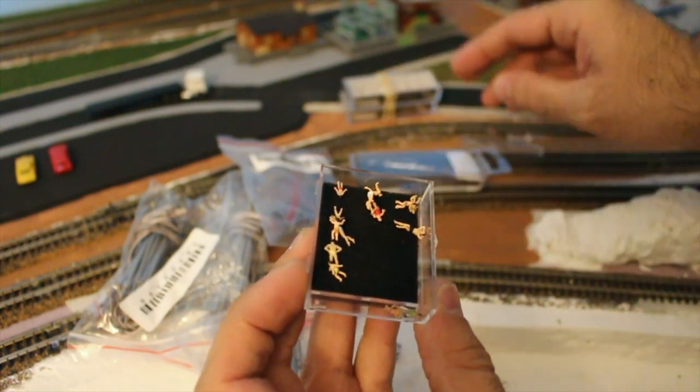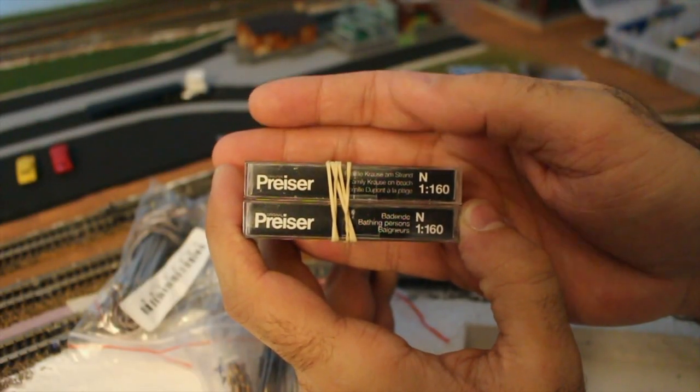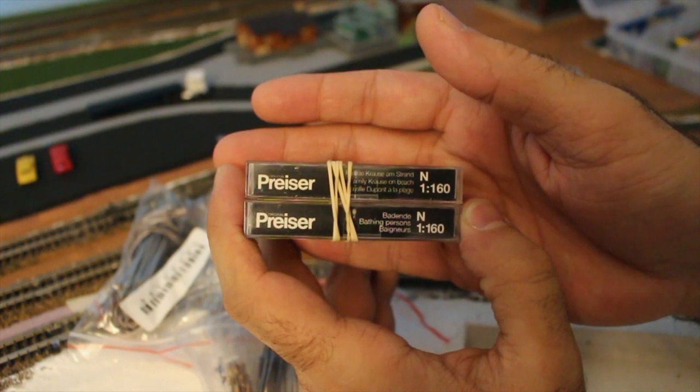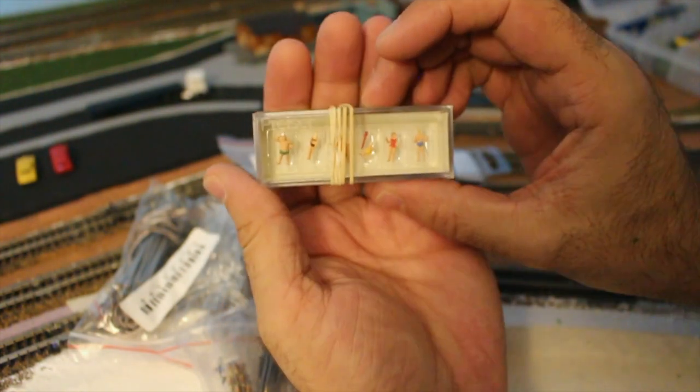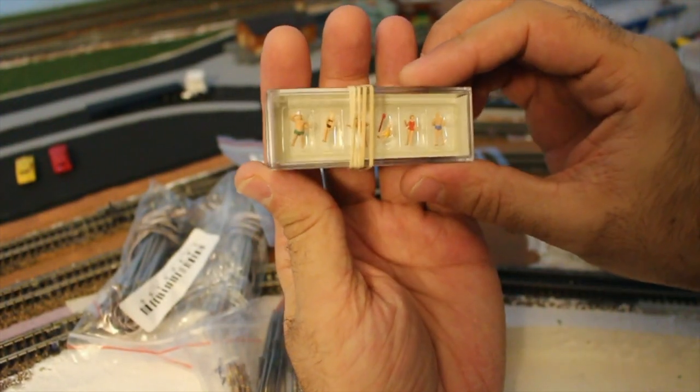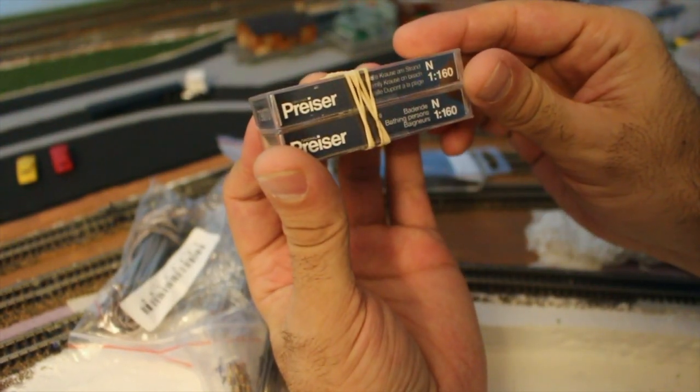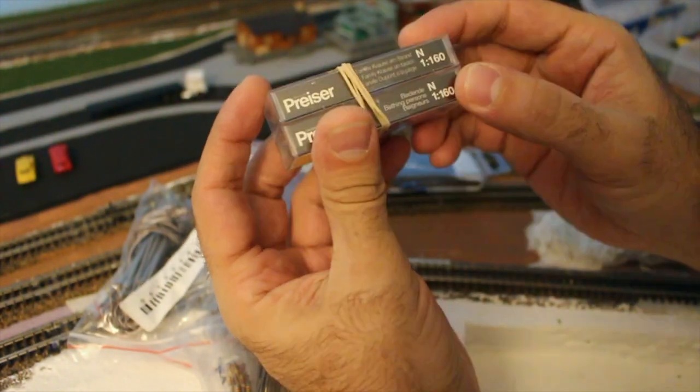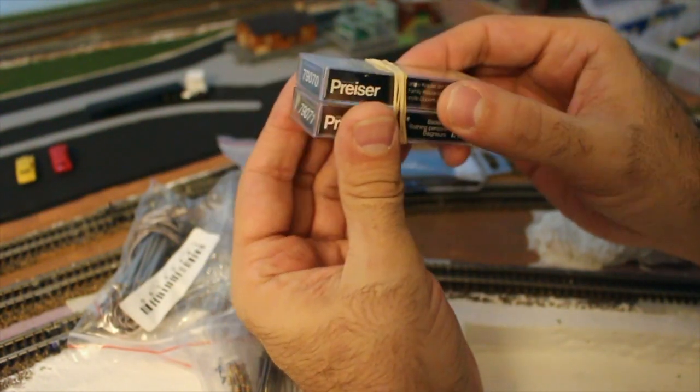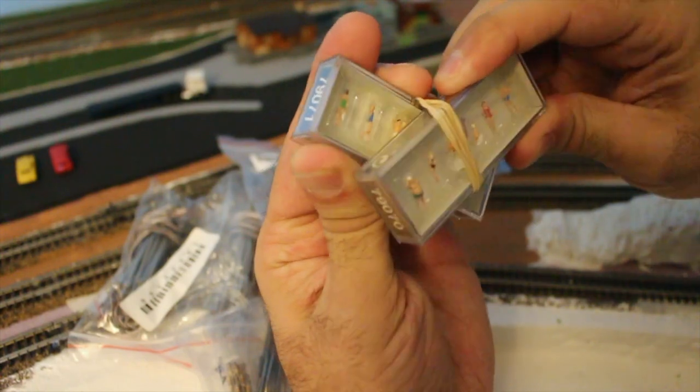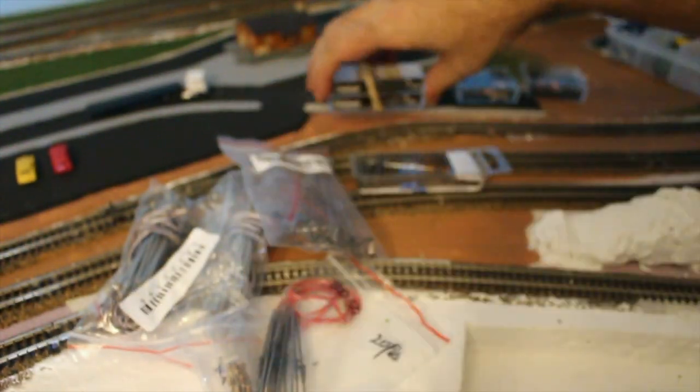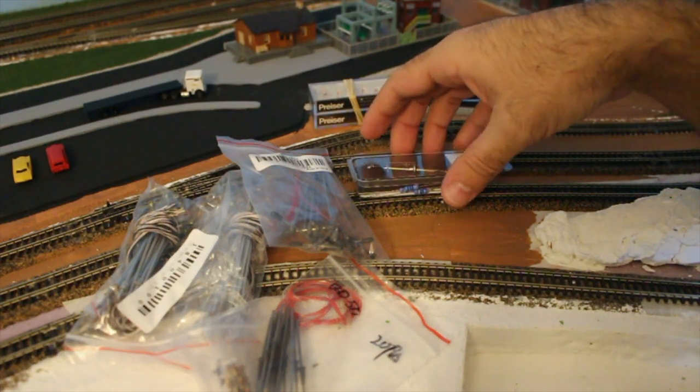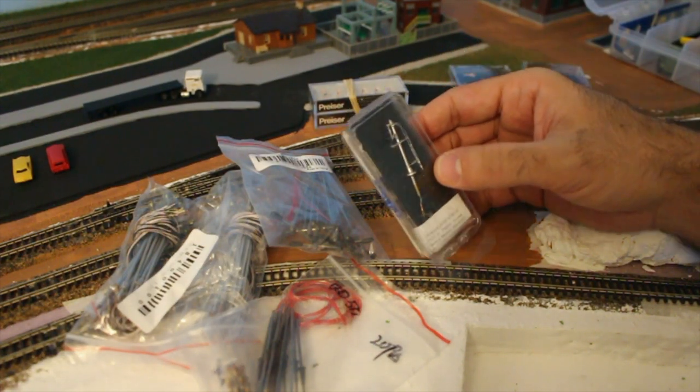And then just random people at the beach as well. So there's two packs here. I'm not gonna even try to pronounce this name. Preiser. See, so yeah I tried. Anyway, so I got two of them. Family on the beach. Then the next one I have is bathing people, which is just different figures. That's gonna be for the beach. And then the best one for last, this thing. Oh my goodness.